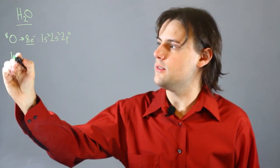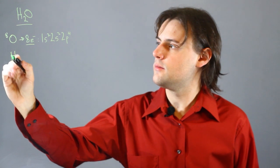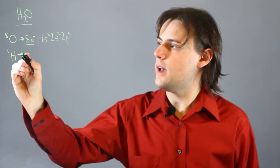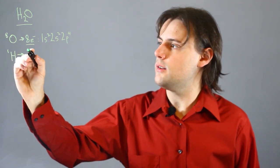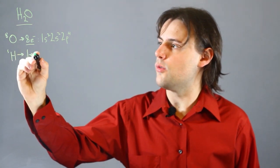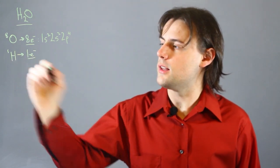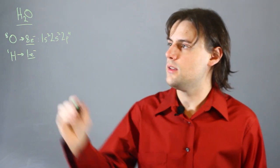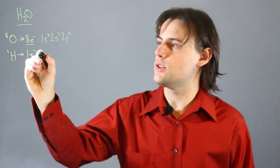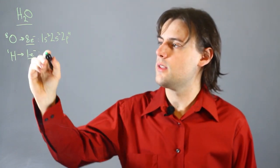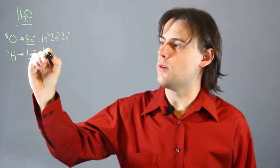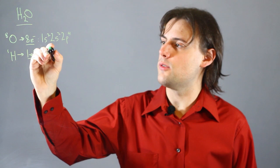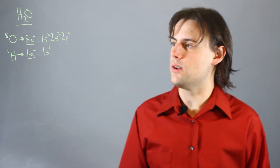Likewise, hydrogen has one proton, and for electrically neutral hydrogen, it would have one electron. And you write the electron configuration simply as 1s1.